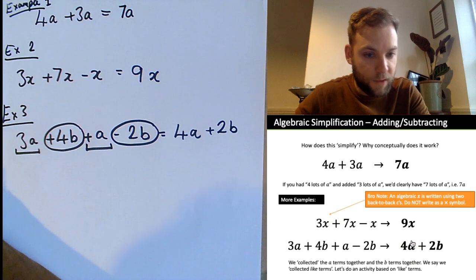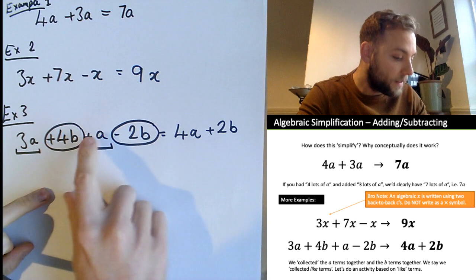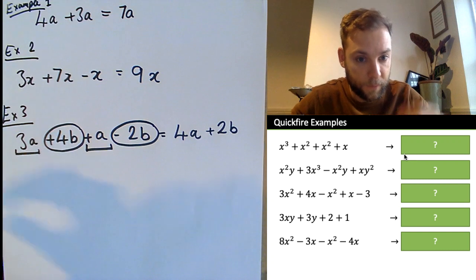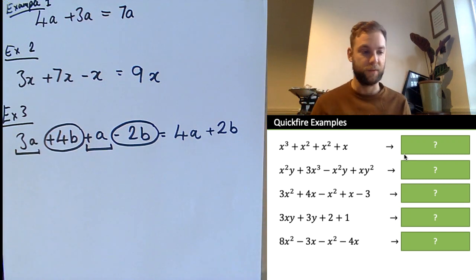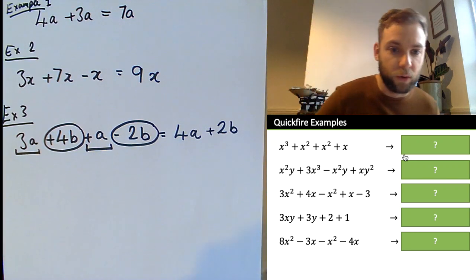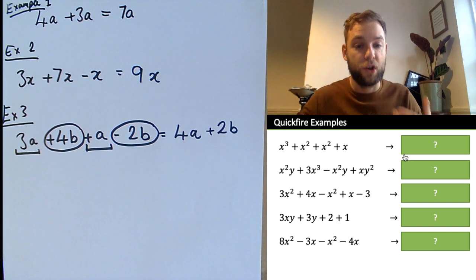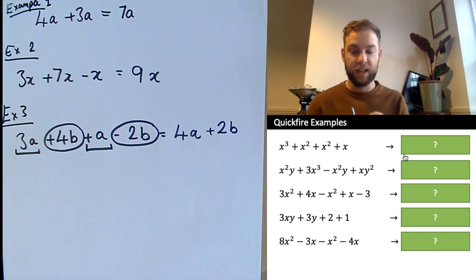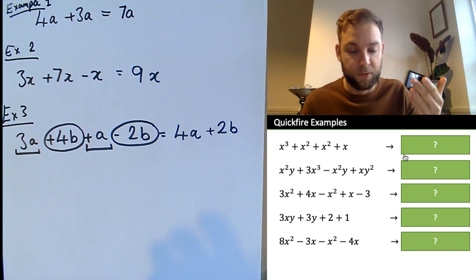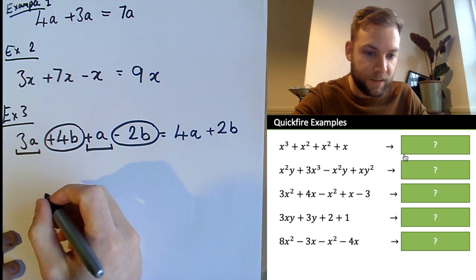It's always the symbol which is in front of the terms that is really important. When collecting like terms, terms have to have the same letters and the same power. Let me demonstrate with example four.